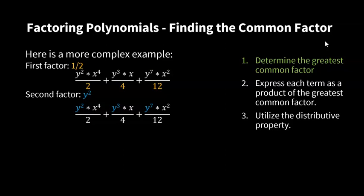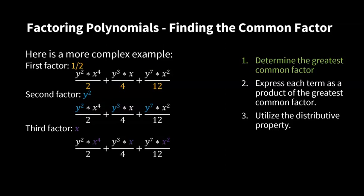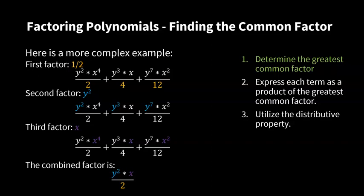The second common factor is y squared. Counting the y's: the first term has y squared (two y's), the second has y cubed (three y's), and the third has y to the power of 7 (seven y's). So we can pull out at least y squared. The third factor concerns x: the middle term has a single x, and the other two terms also have at least one x, so x is a common factor. The overall greatest common factor is y squared times x divided by 2, since all three factors are found within each term of the polynomial.